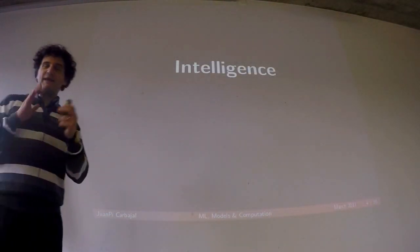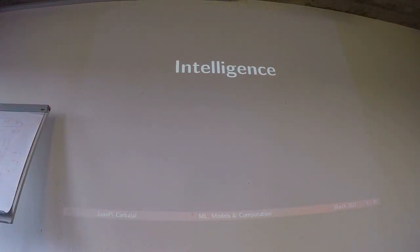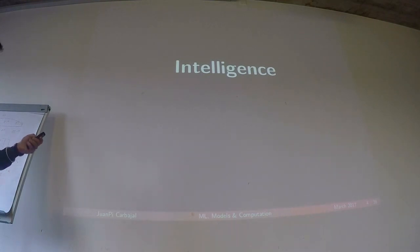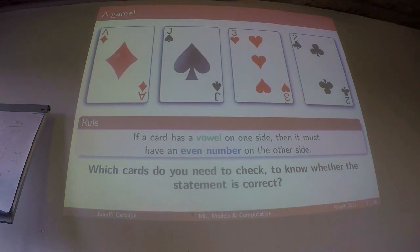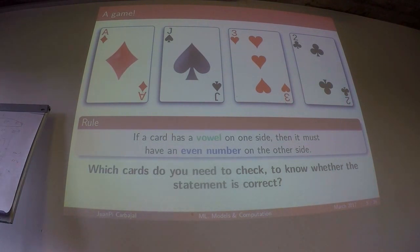We start with intelligence — it's a big topic, so to avoid technical discussions, I brought two games. In the first game, you are given four cards. The person who gives the cards tells you there is a rule: if a card has a vowel on one side, then it must have an even number on the other side. The game is: what is the minimum number of cards you need to check to verify that this rule is being obeyed? You have 30 seconds to choose which cards you will flip.